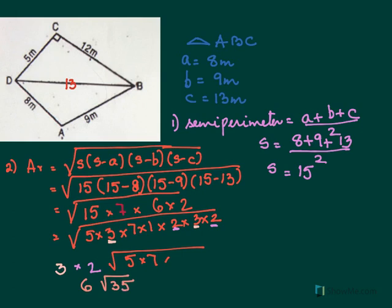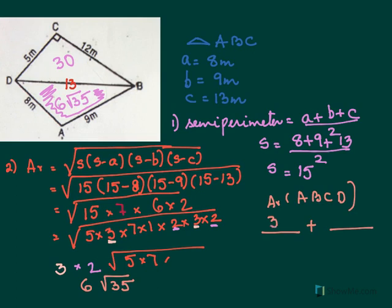So we found the areas. This area was 6 root 35, this area. And the other area earlier was 30. So the area of that entire area of ABCD, area of ABCD, is area 1 plus area 2. The area 1 was 30 of BDC, and area 2 was 6 root 35. That will be 30 plus 6 root 35.